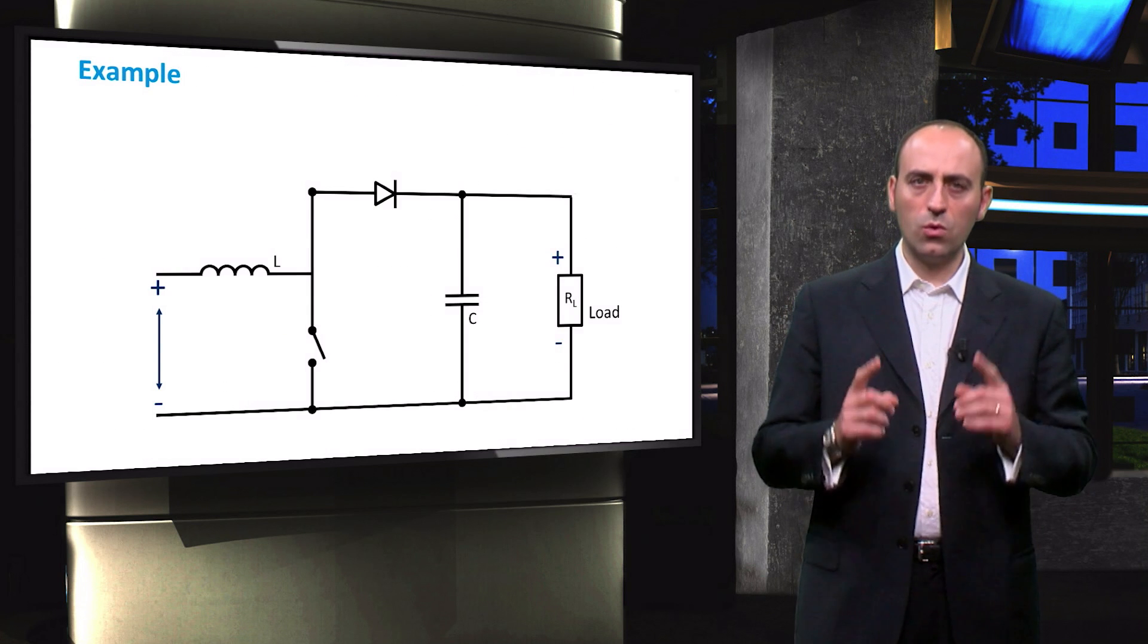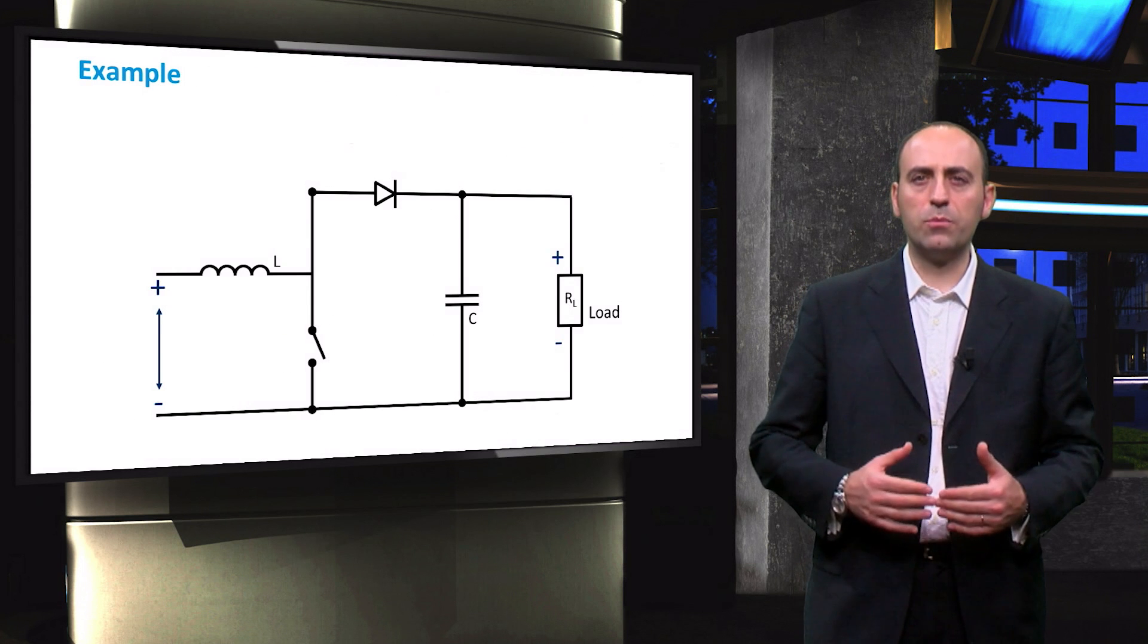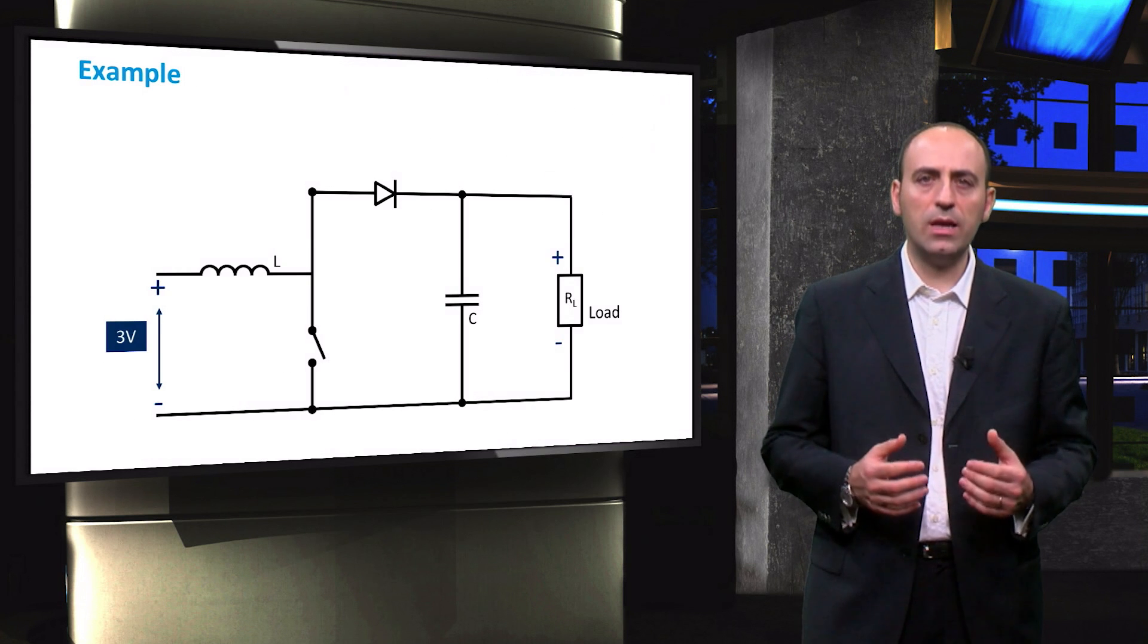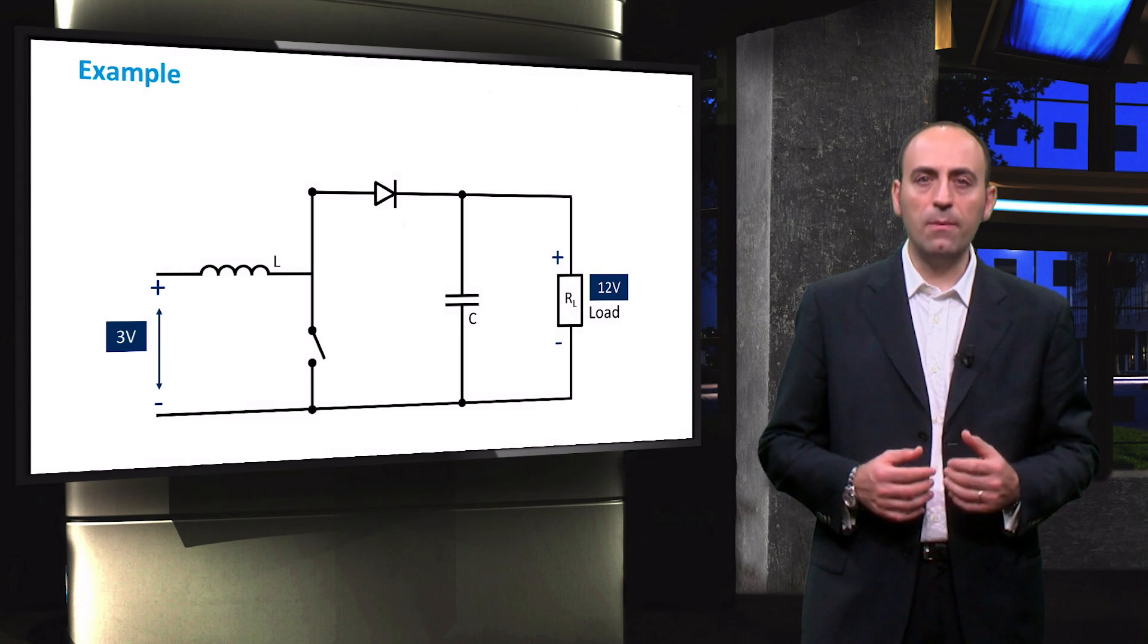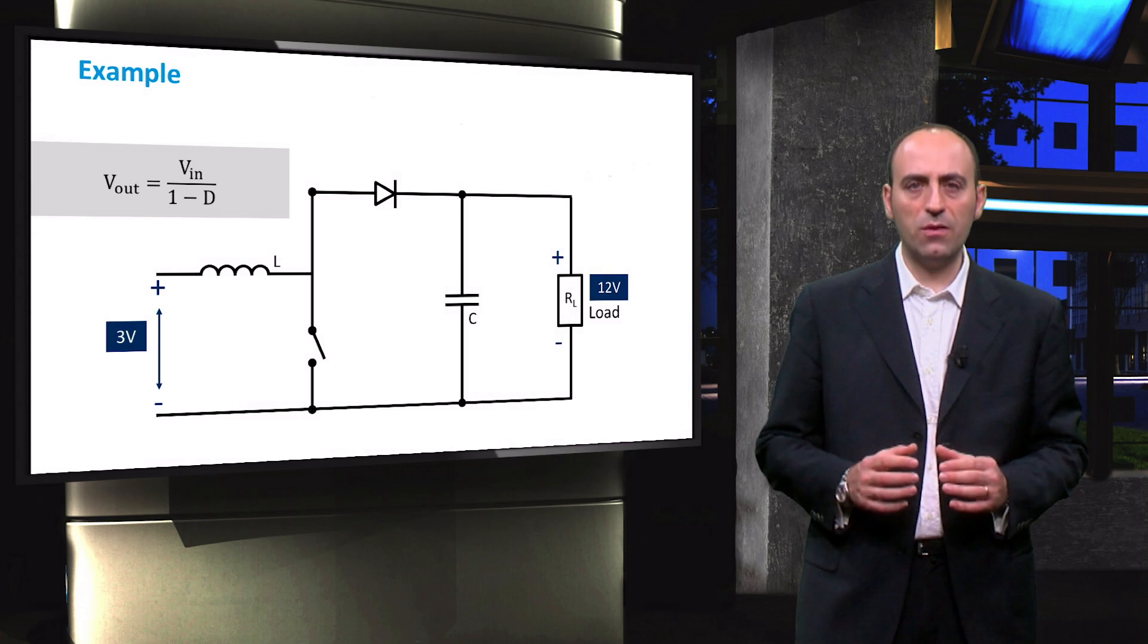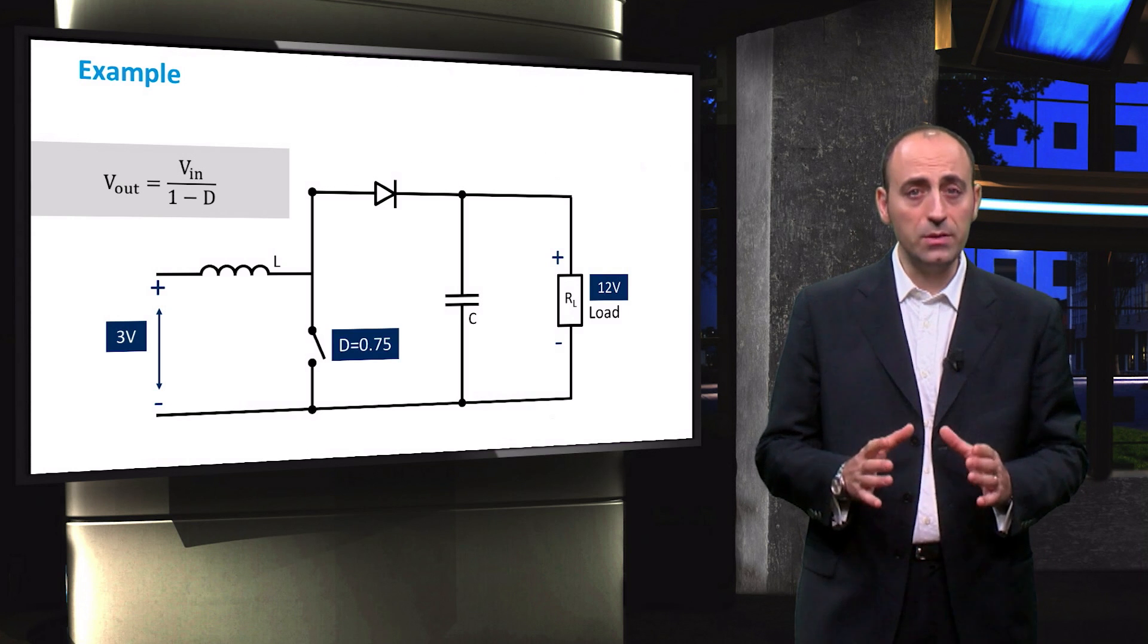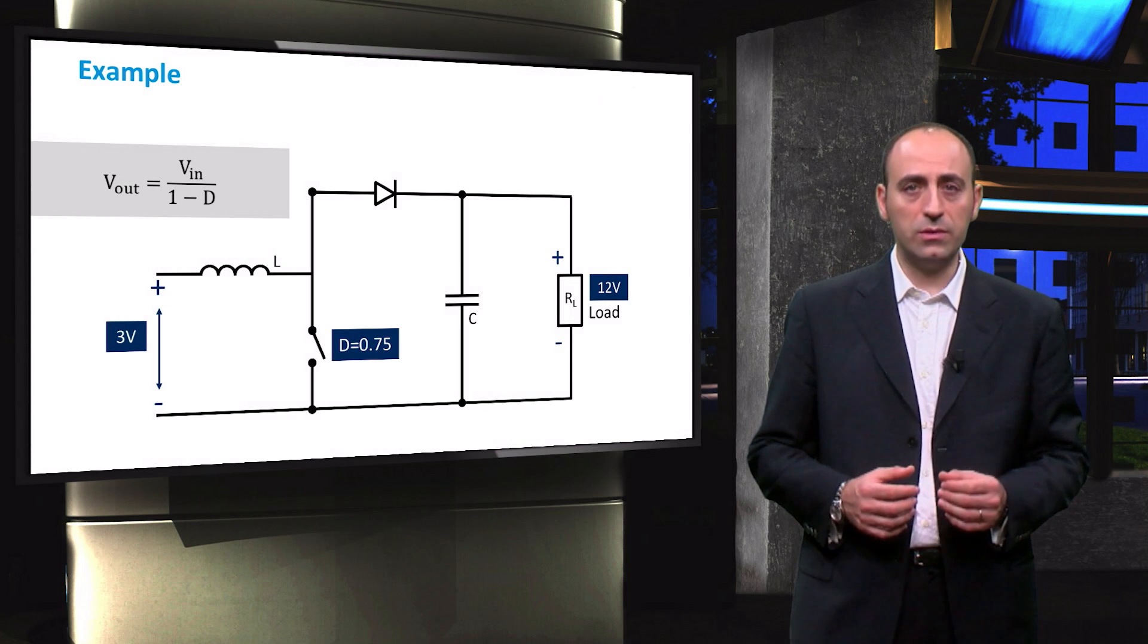Just an example to conclude the boost converter. If now we have a shaded module that is producing only 3 volts, and we want to supply a load that requires 12 volts, then according to the equation, we need a duty cycle of 0.75. This means that the switch stays on for 75% of the cycle period.